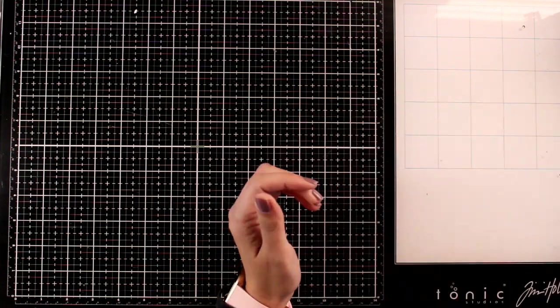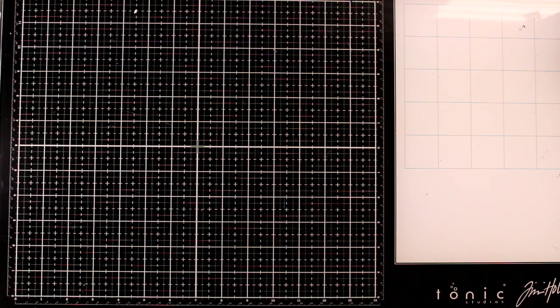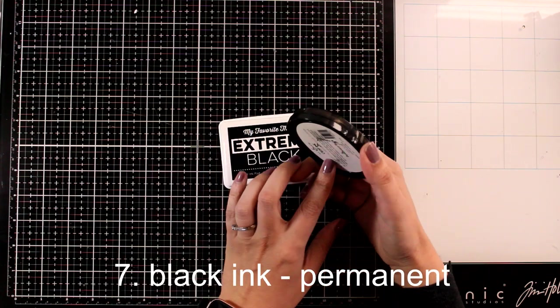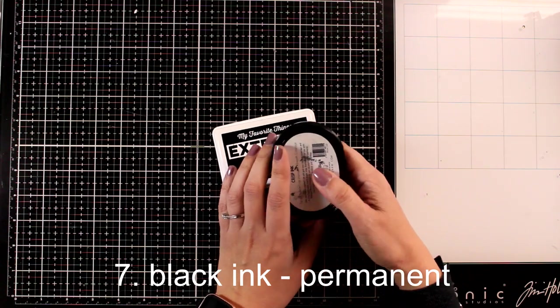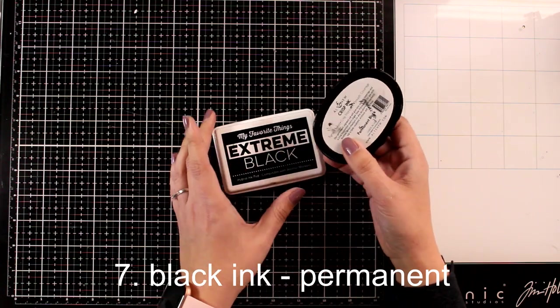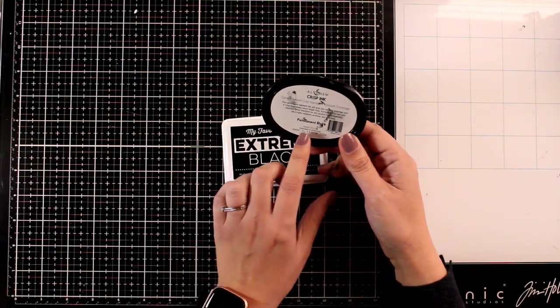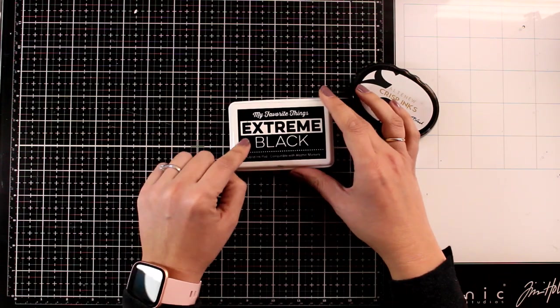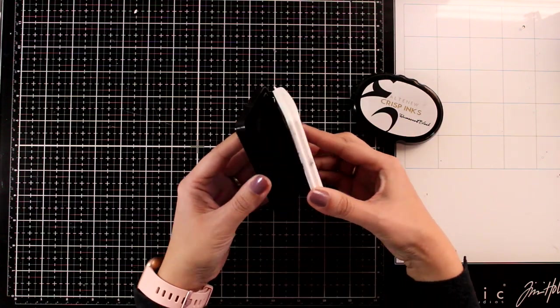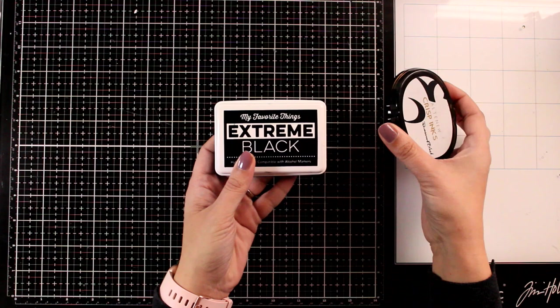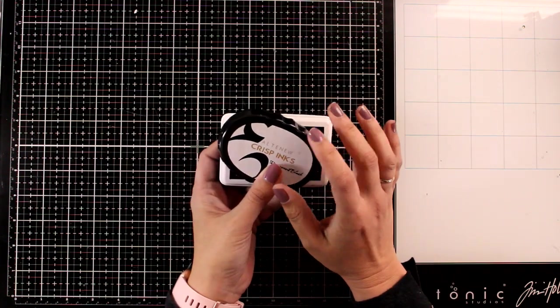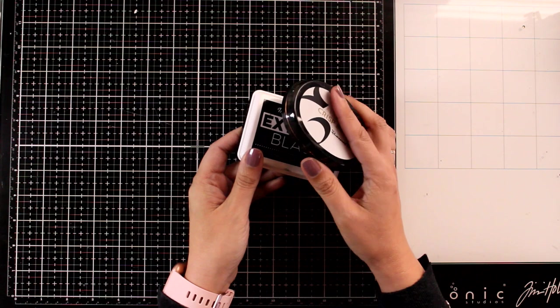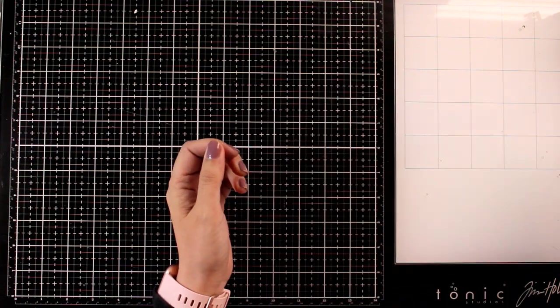Since this list is for card making, you cannot stay away from a good black ink. I always like to use a permanent black ink, and there are many different ones in the market. I usually work with the Altenew permanent one or the black extreme one by My Favorite Things. When you stamp with permanent ink, you can use any coloring mediums later without smudging.